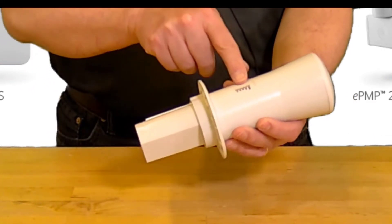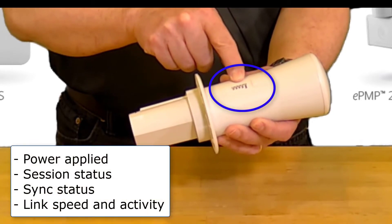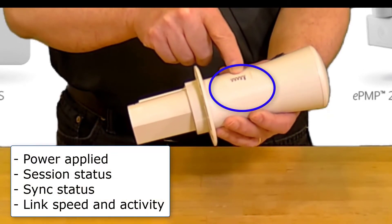On the side of the tube there is a row of LEDs which indicate power applied, session status, sync status, and link speed and activity.